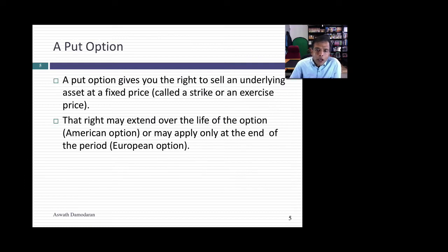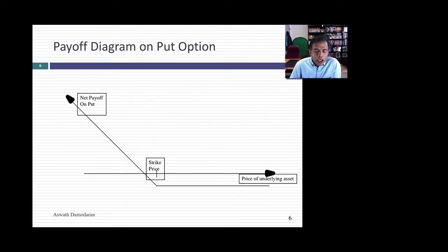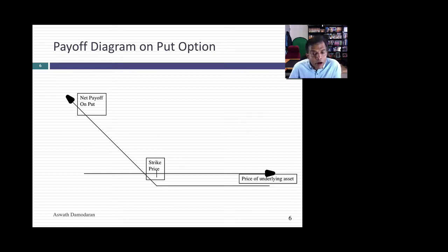A put option gives you the right to sell an asset at a fixed price anytime before expiration. You will exercise this right only if the stock price drops below the strike price, and you will discard the option if the stock price rises above. If the stock price is less than the strike price you exercise and make the difference; if higher, you write off whatever you originally paid. Here too the loss is fixed, and the profits — while not infinite because the price can't drop below zero — are potentially very large.